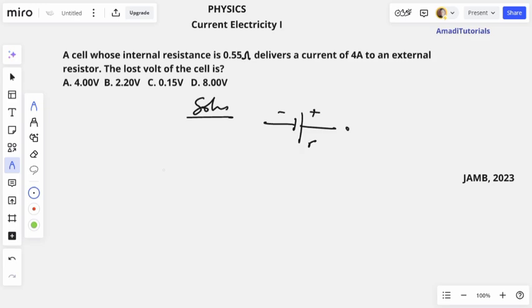And then when it is connected to an external resistance, we call that external resistance load resistance or external resistance. So it has internal resistance and it has its EMF here, that's the voltage that it reads when it's not yet connected.